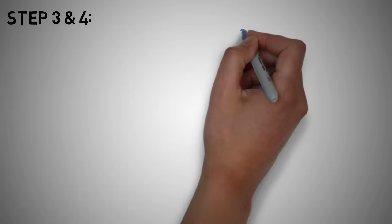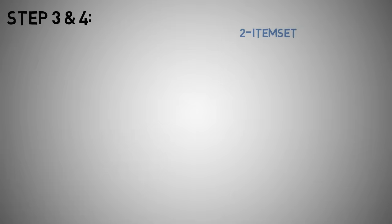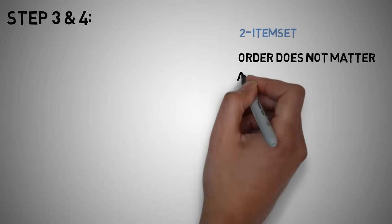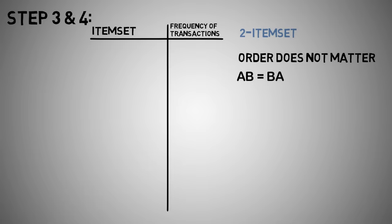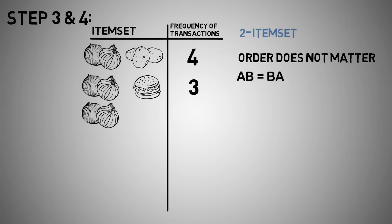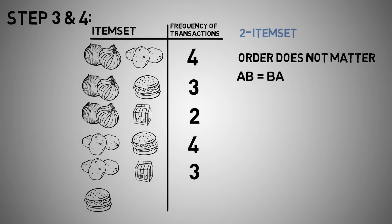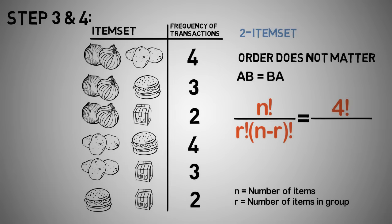Step 3: the next step is to make all possible pairs of the significant items, keeping in mind that order doesn't matter — AB is the same as BA. Take the first item and pair it with all others: onions and potatoes, onions and burgers, onions and milk. Similarly, for the second item, pair it with preceding items: potatoes and burgers, potatoes and milk. All pairs in our example are: onions–potatoes, onions–burgers, onions–milk, potatoes–burgers, potatoes–milk, and burgers–milk — giving us 6 pairs in total.